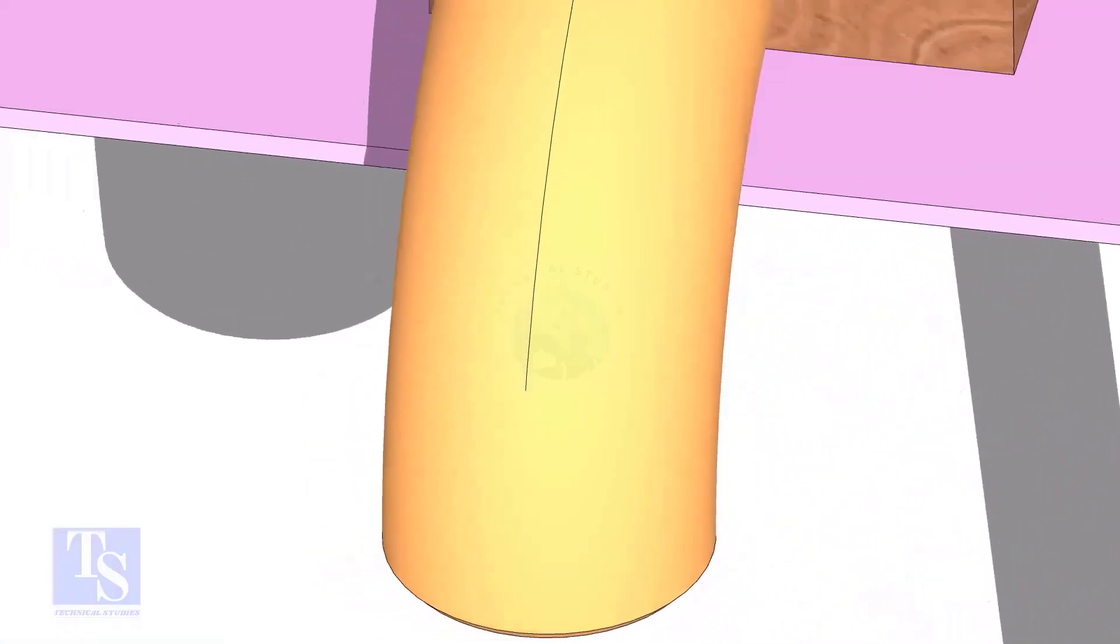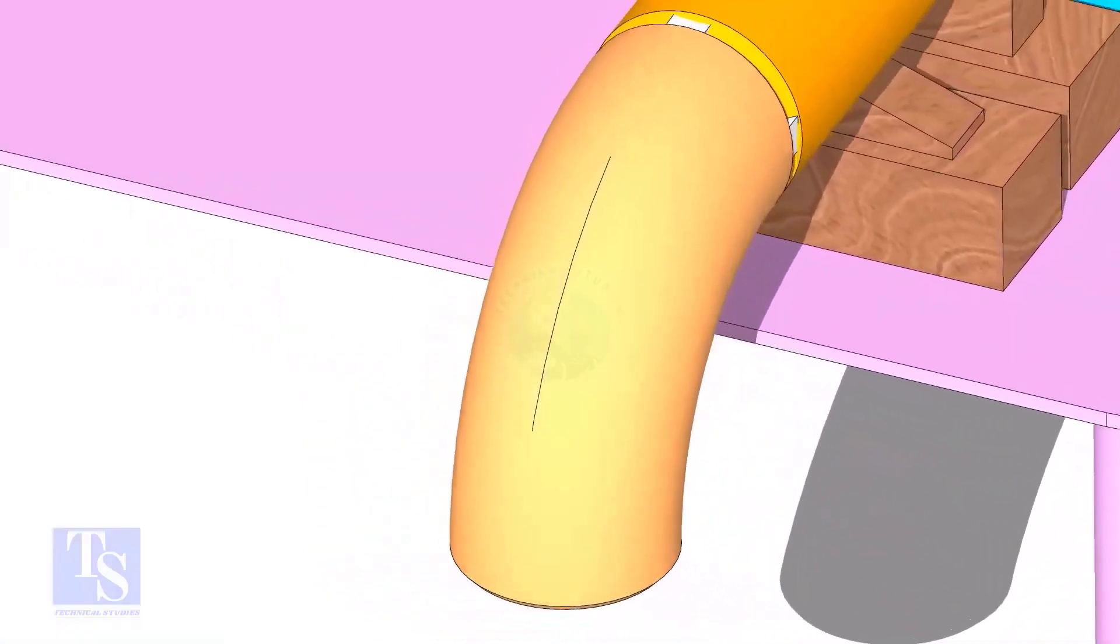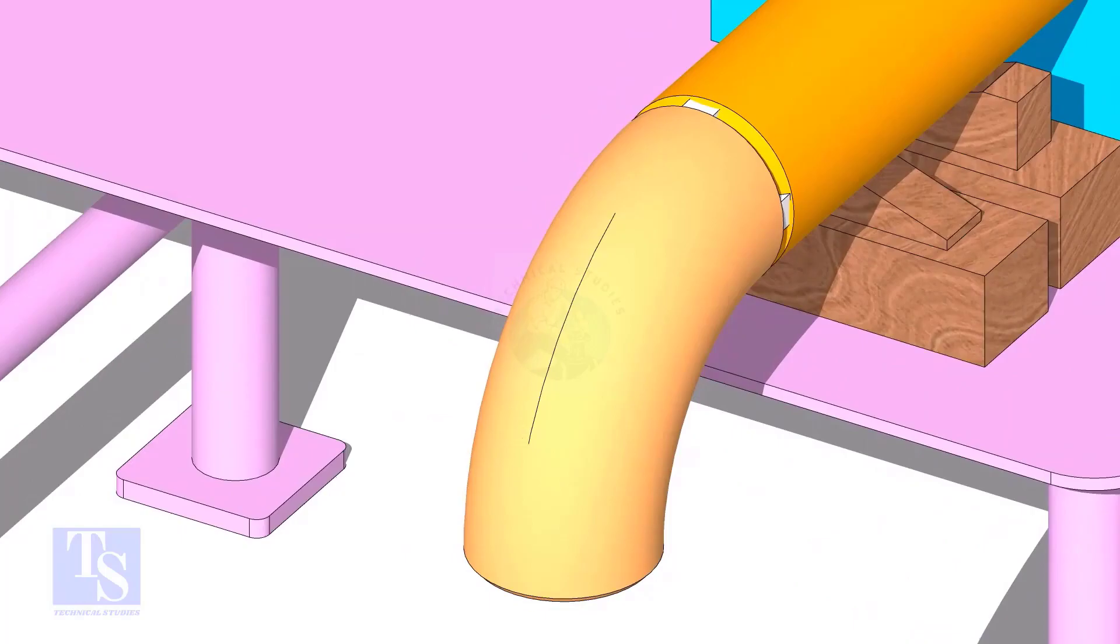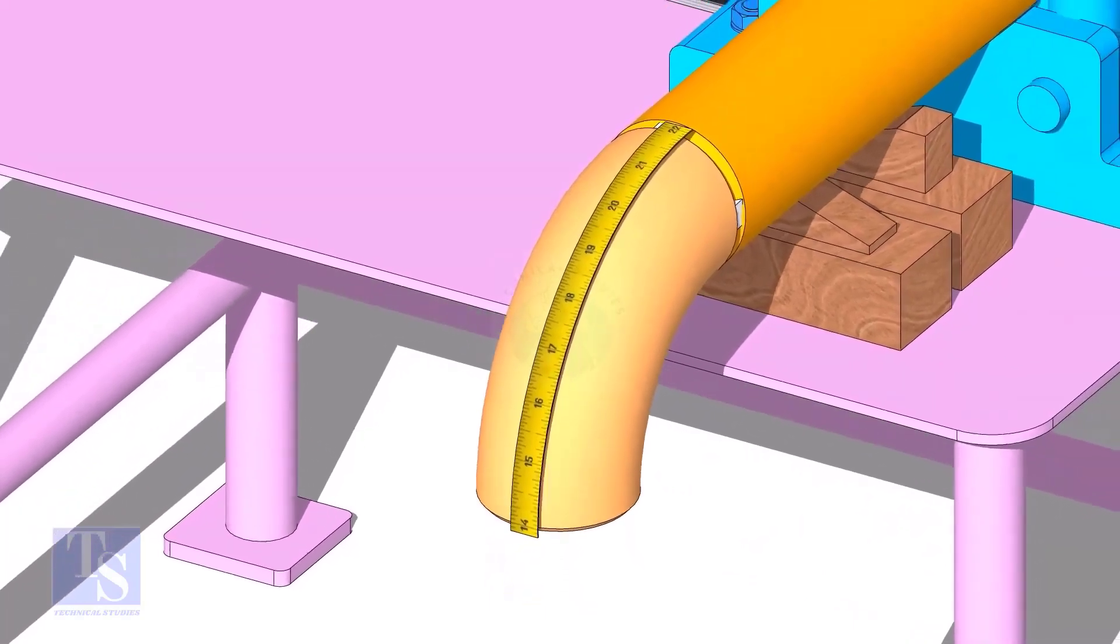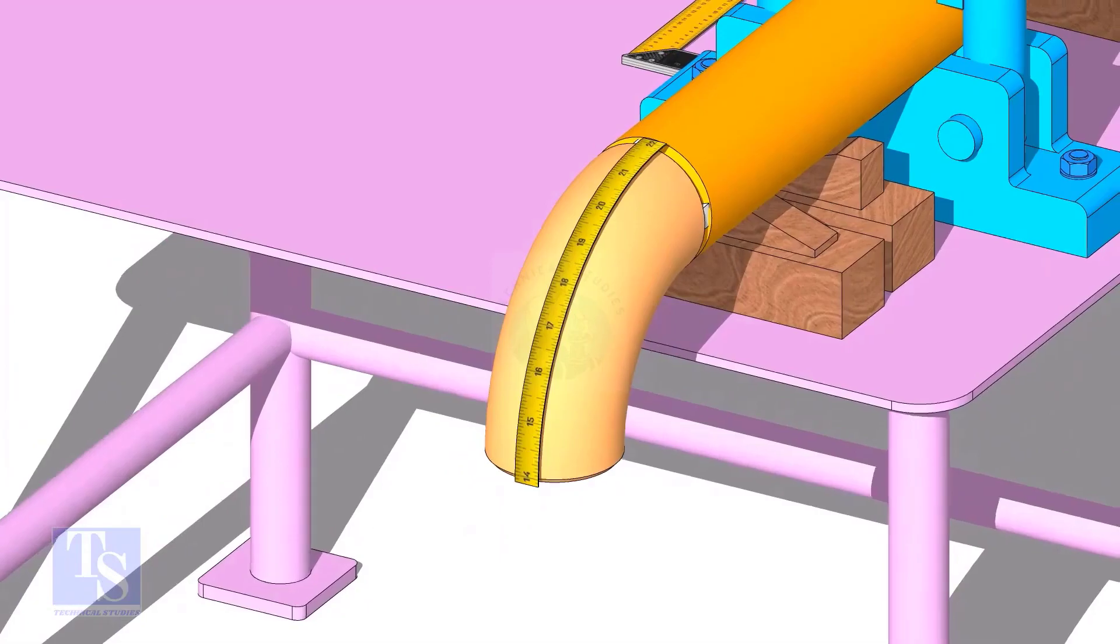Draw a line connecting these marks. Measure the outer circumference of the elbow and mark the half circumference on the center line, as shown.